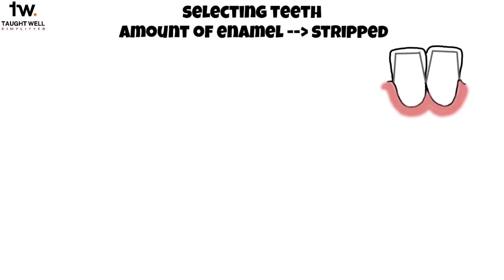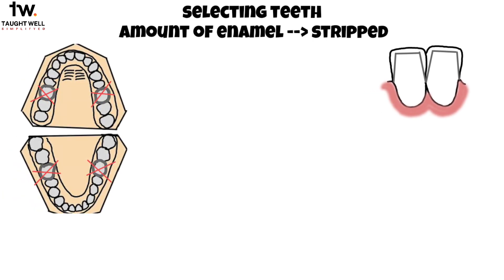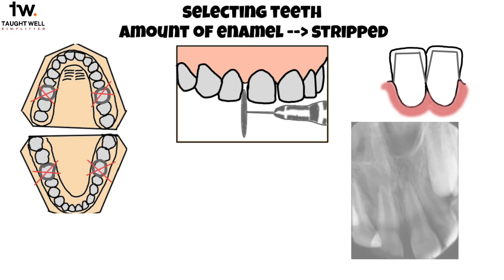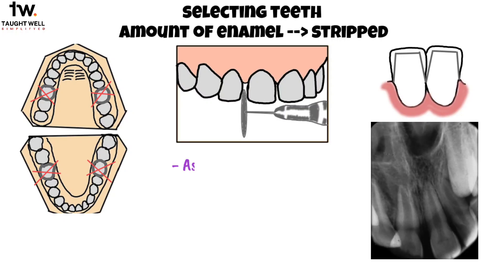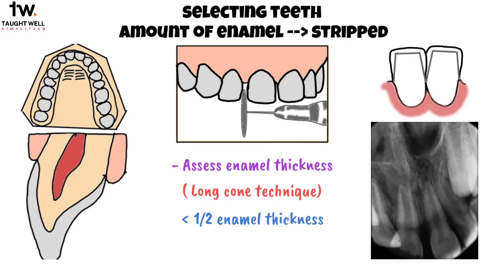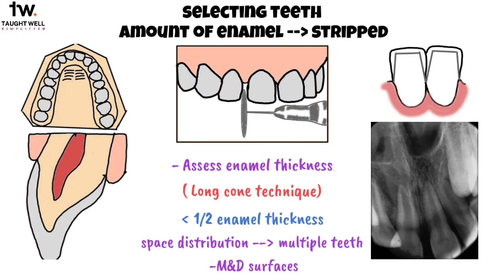In the second step, selecting teeth and amount of enamel to be stripped: mandibular incisors are commonly stripped, but all teeth except the banded molars can undergo stripping. Maxillary anterior teeth may be stripped if there is excess tooth material in that region and sufficient enamel thickness. Intraoral periapical views are recommended to assess enamel thickness, with the long cone technique preferred. No more than half the enamel thickness should be removed, and space distribution should be spread across multiple teeth and mesial and distal surfaces.